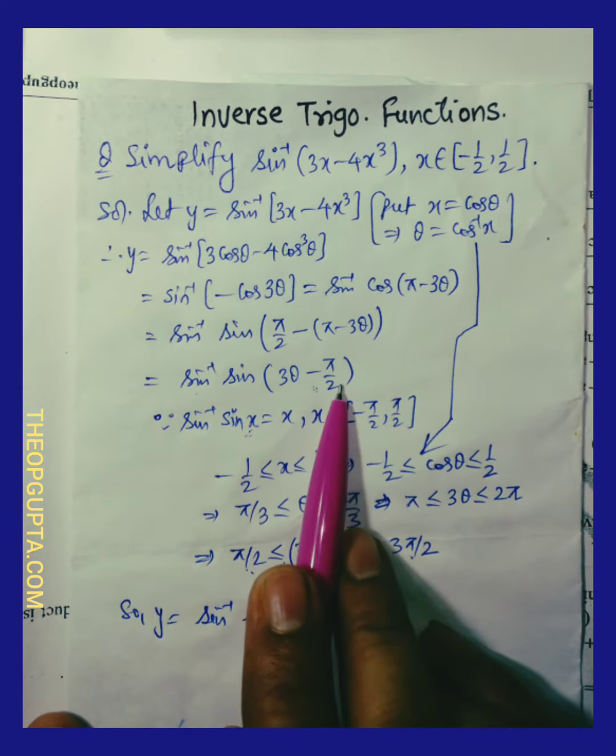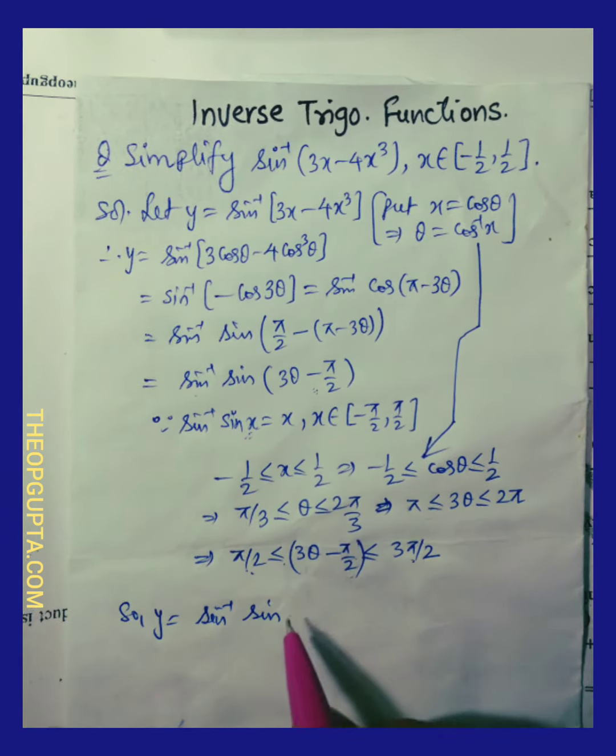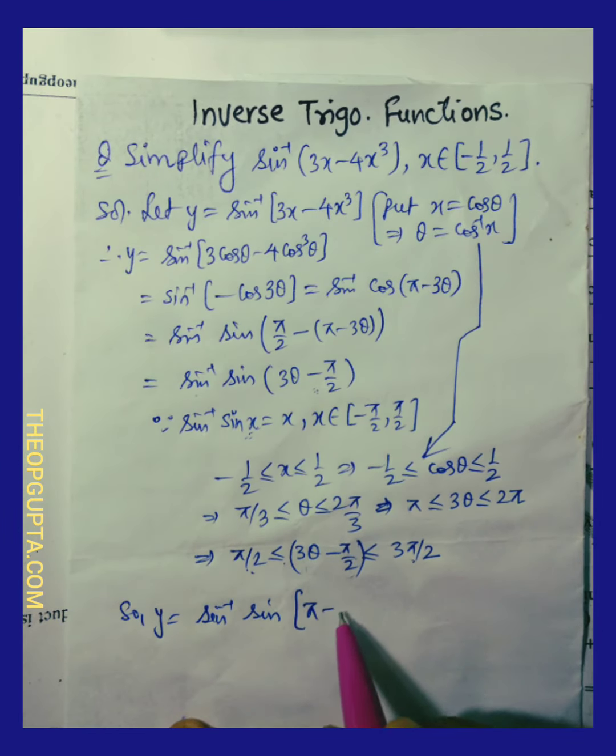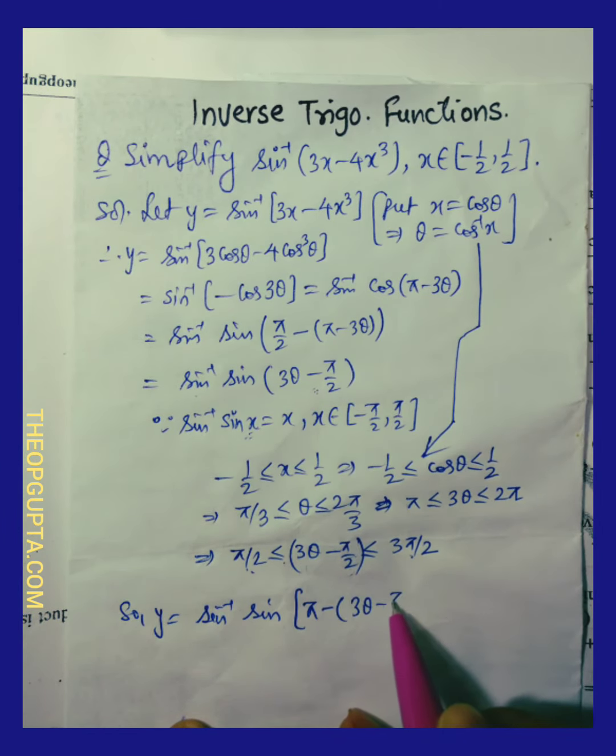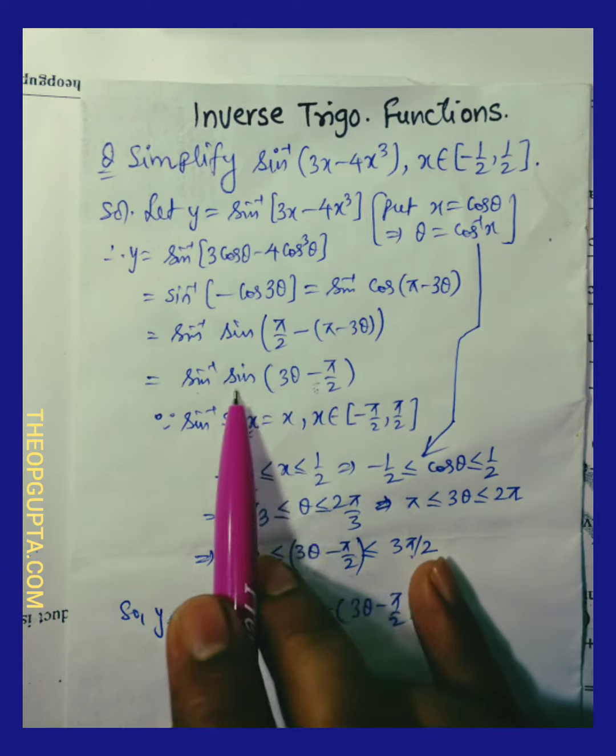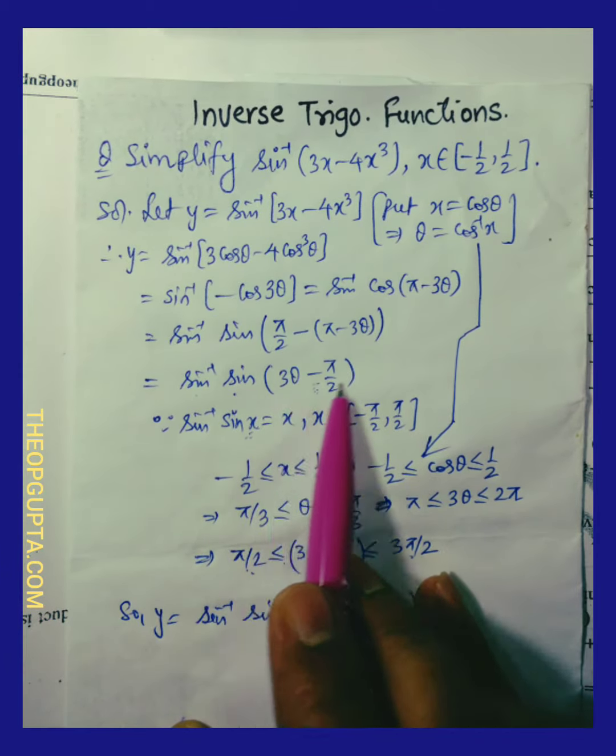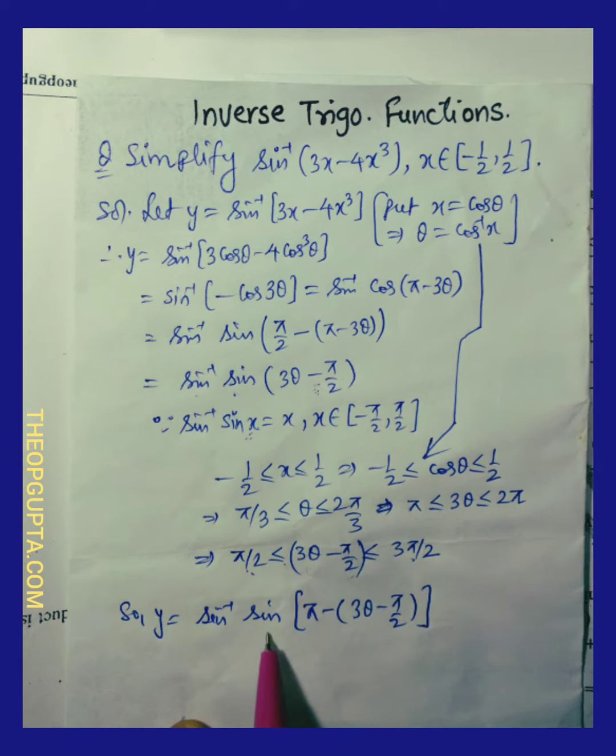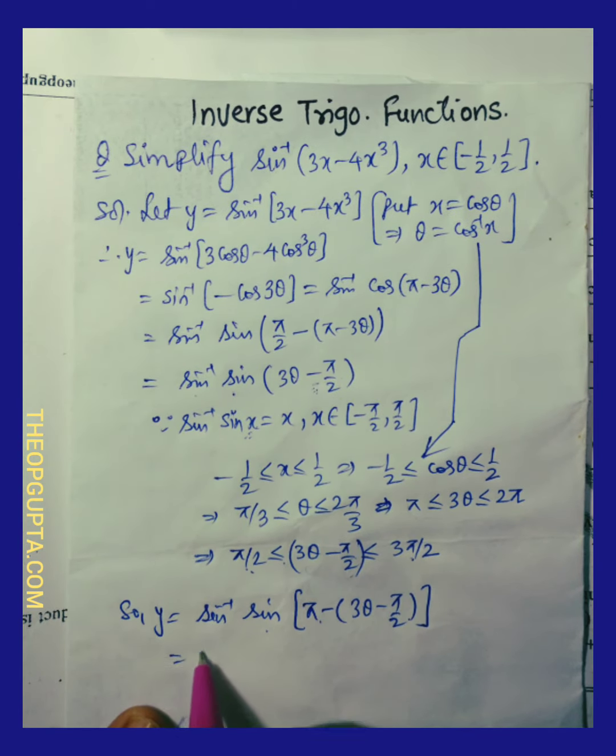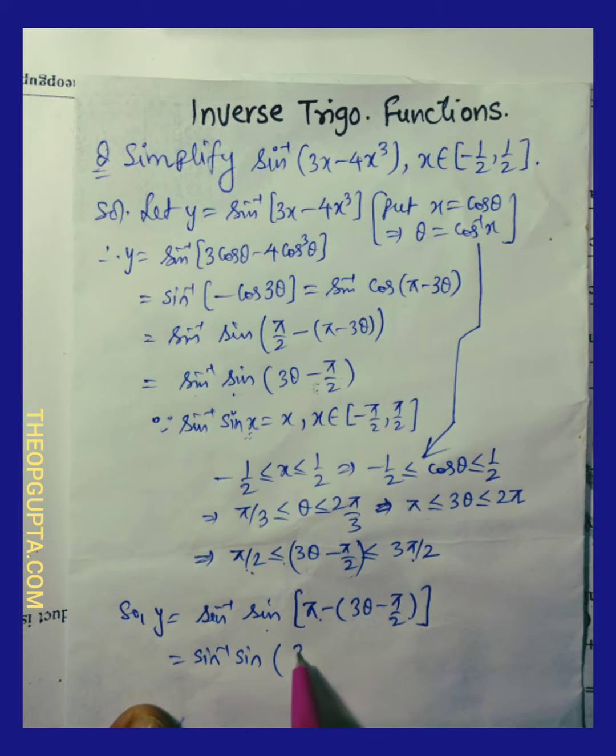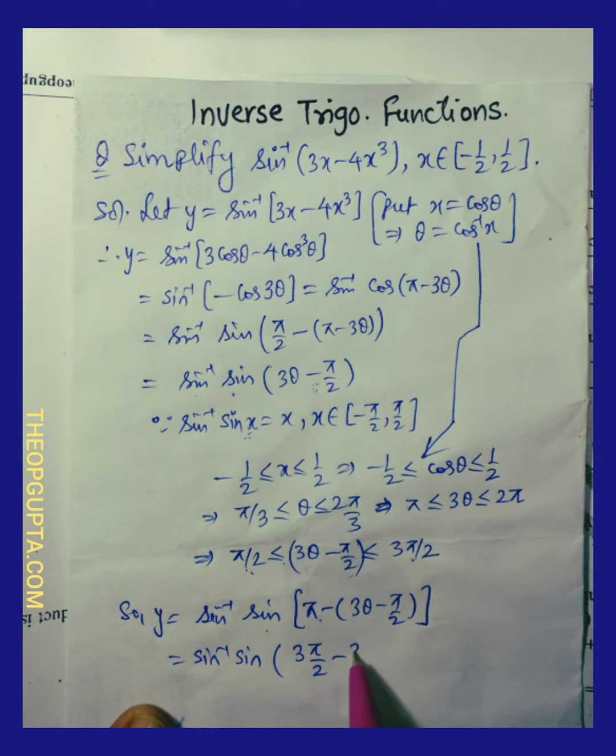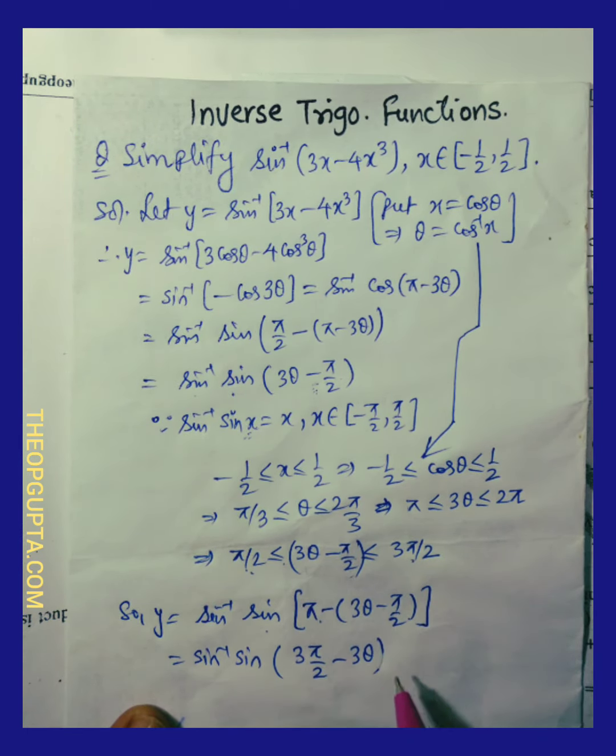So what we will do, we will write sine inverse of sine 3 theta minus pi by 2 as pi minus of this angle. Sine of a is sine pi minus a. So if I call it as a, sine of a is sine pi minus a, which becomes in the upcoming steps as 3 pi by 2 minus 3 theta.